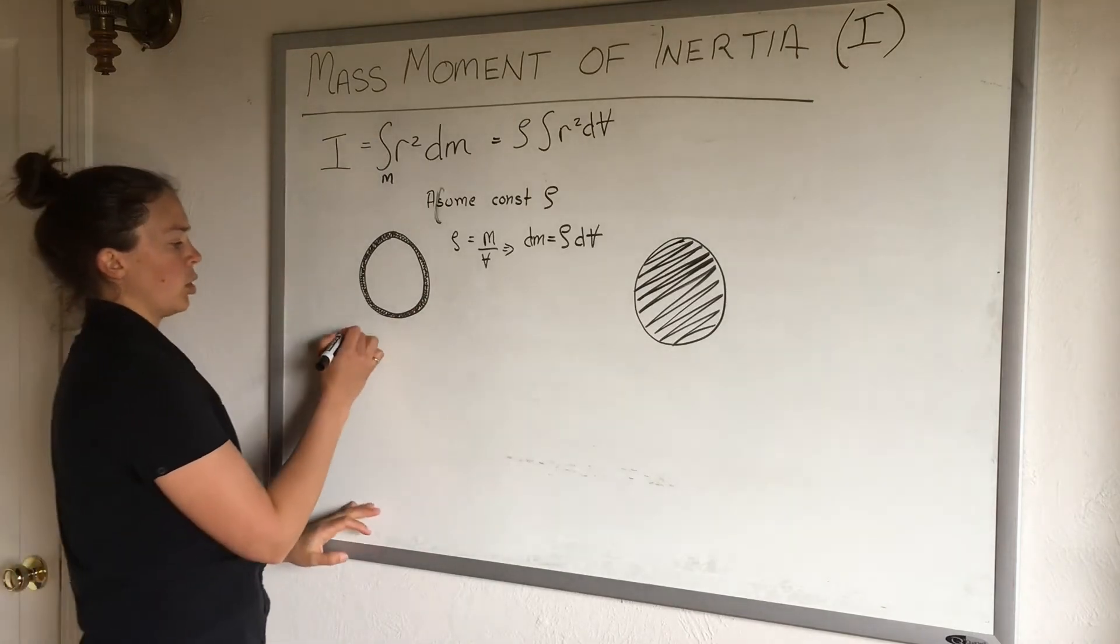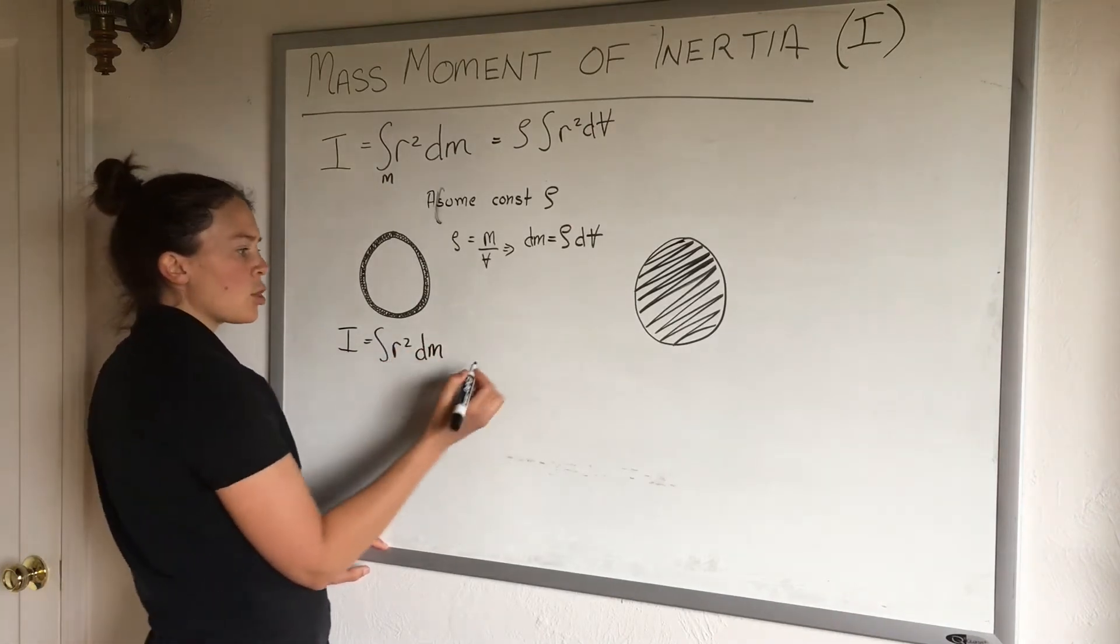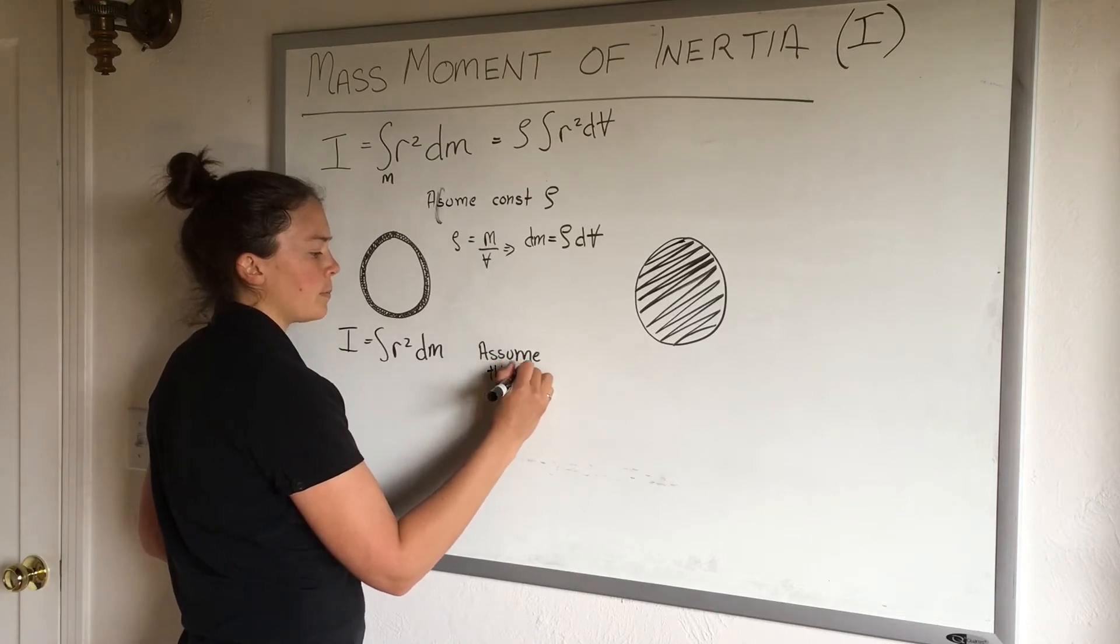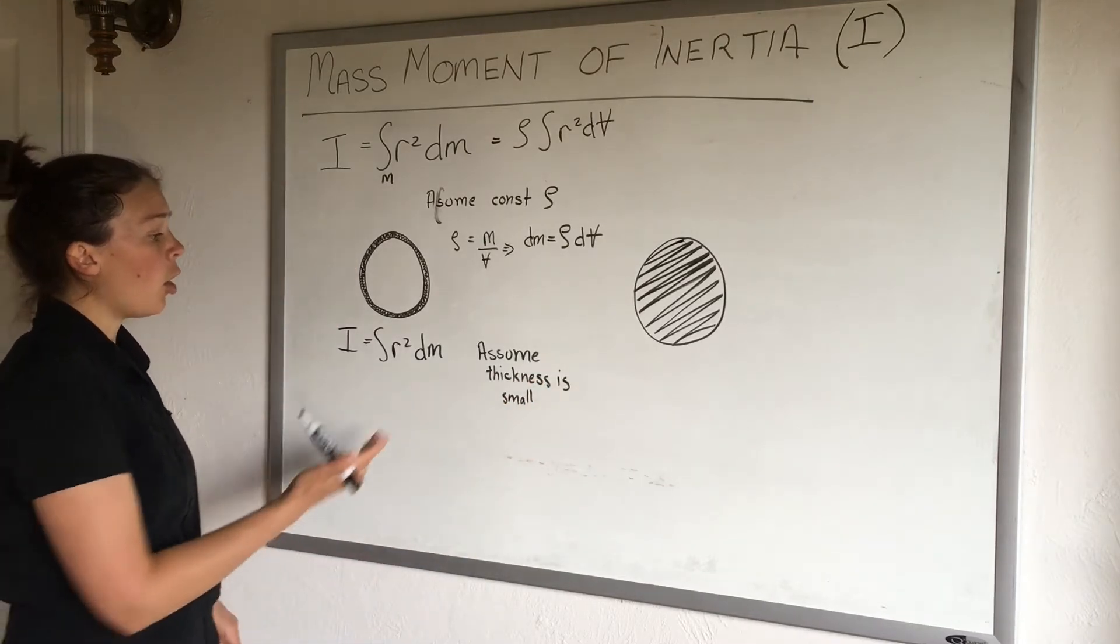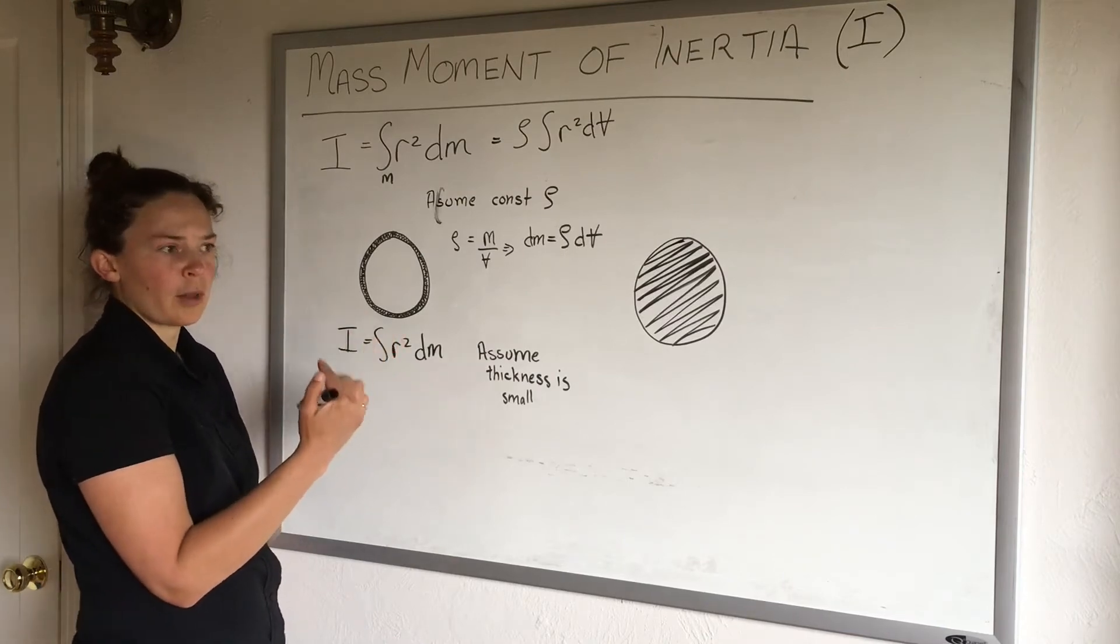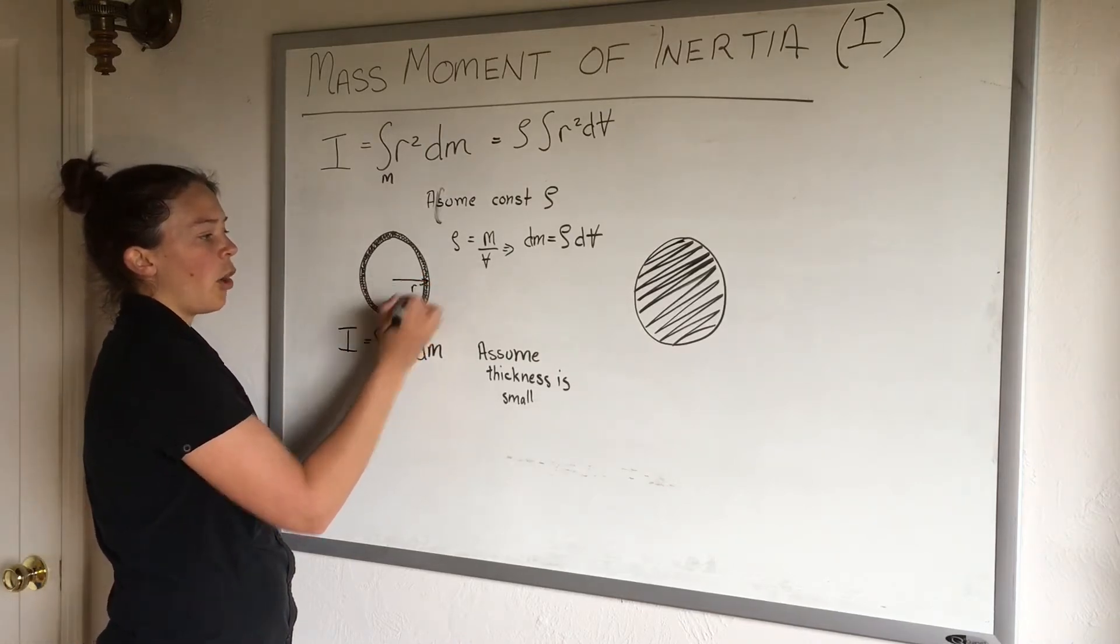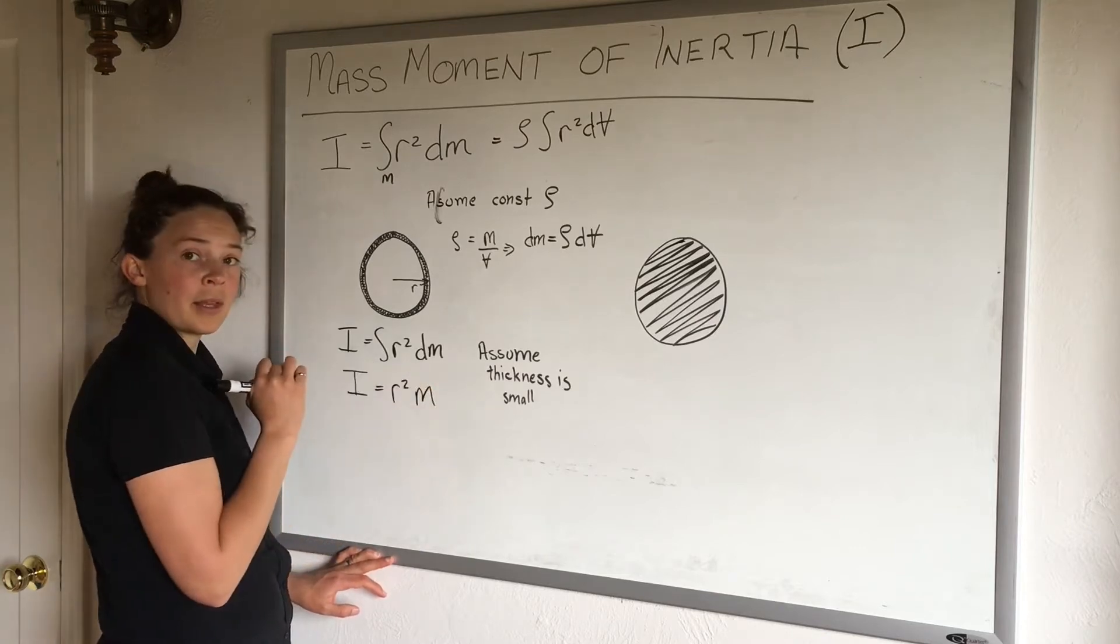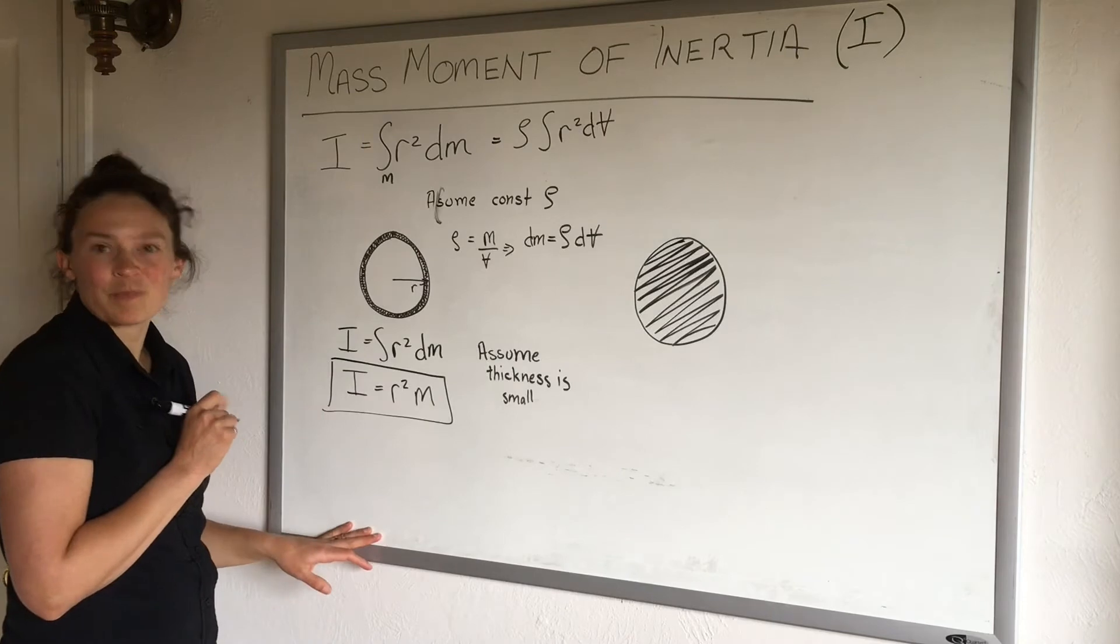I'll show you how that works when we do the solid one, but when we have just the ring, I want to go back to our original equation I = ∫r²dm. I'm going to make an assumption here as well: assume the thickness is negligible. If we assume that it's a very small thickness, then all of our mass is at this radius r. So is radius a function of mass? It's not—it's all at the same outer radius r. This simplifies in this case to I = r² ∫dm = mr². So if we have this kind of cylindrical ring or hoop, we can calculate the mass moment of inertia if we know the mass and the radius.